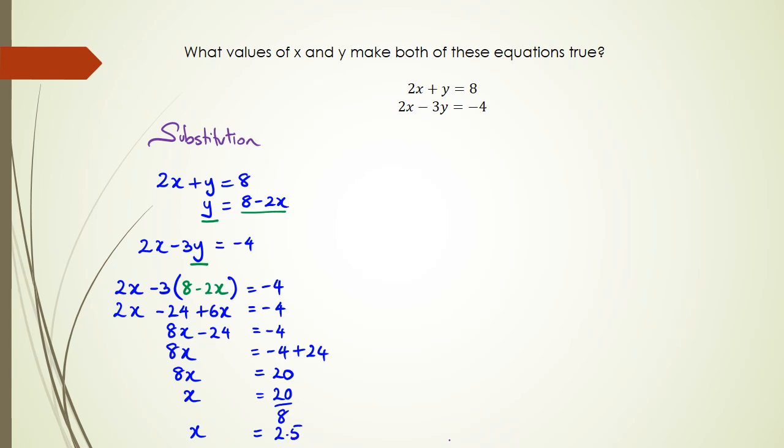20 divided by 8 can be written as 2.5, so if x equals 2.5, then we take the x and put it back into this equation to figure out what y is. We have y equals 8 minus 2x, so y equals 8 minus 2 multiplied by 2.5, which gives us 8 minus 5, so y is equal to 3.